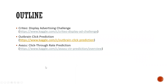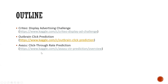This is the outline of today's talk. We are going through three Kaggle competitions on click prediction. The first is the Display Advertising Challenge, a very popular competition. The second one is the Outbrain Click Prediction, and the third is the Click-Through Rate Prediction.